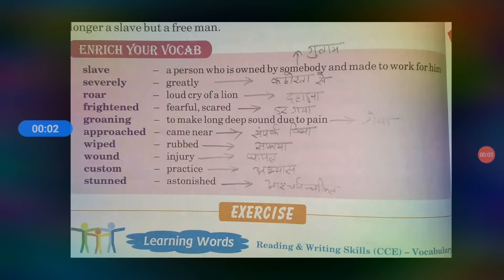Hello students. How are you? I hope you will be fine. In the previous chapter, we read chapter 3rd explained in Hindi. The chapter name is Androclus and the Lion. Today we will do exercises and word meanings from this chapter.